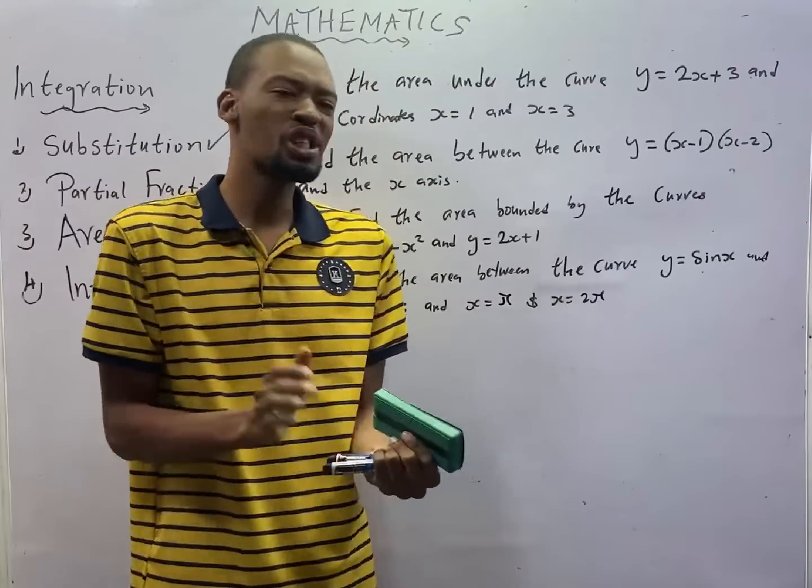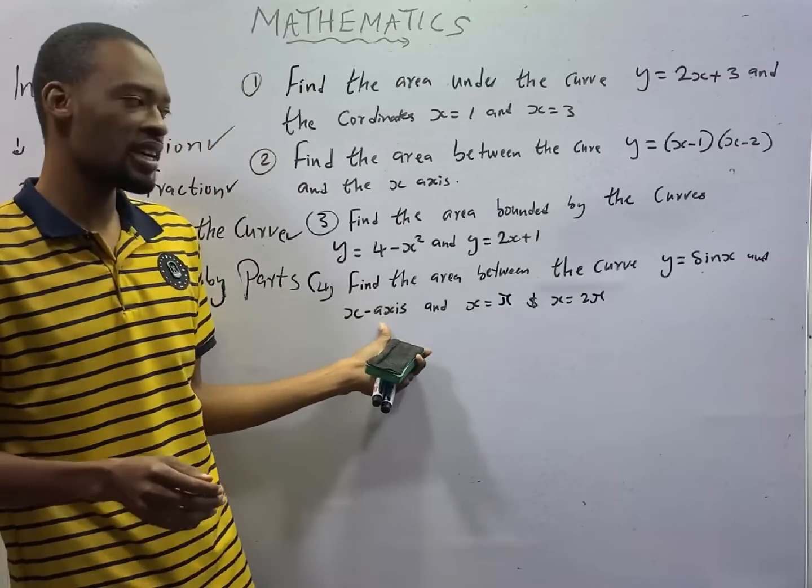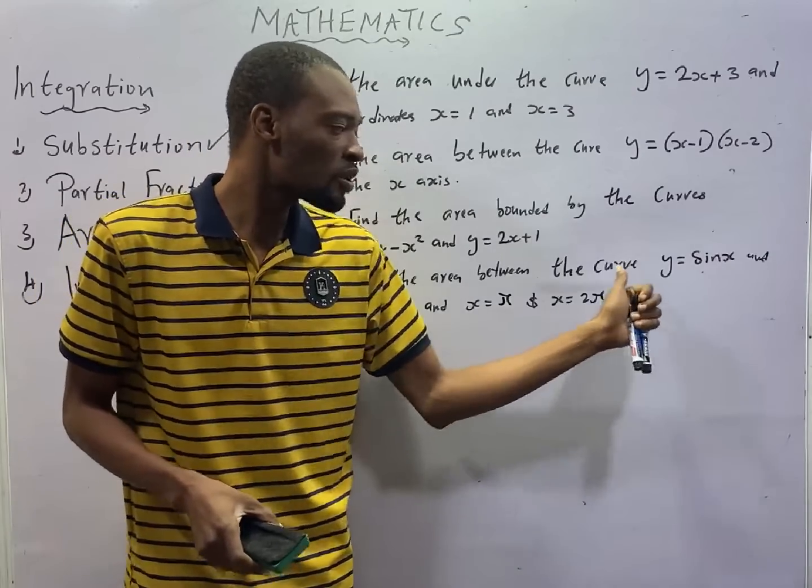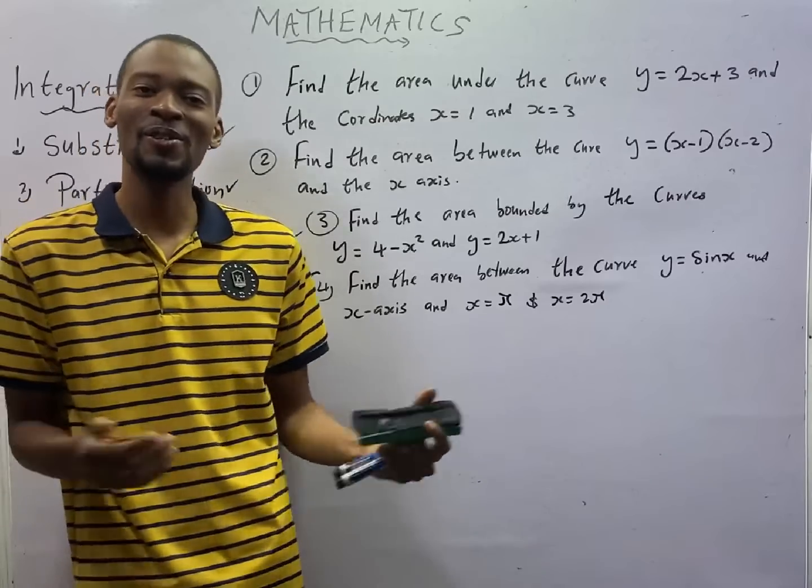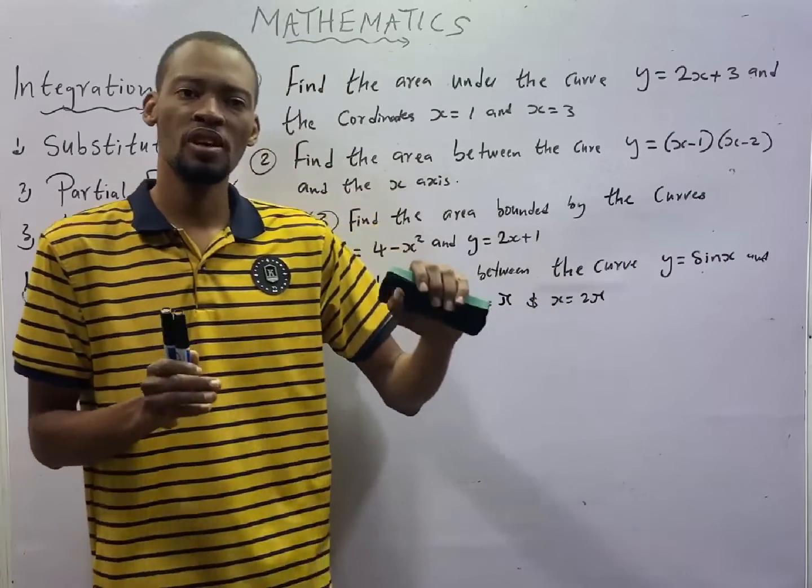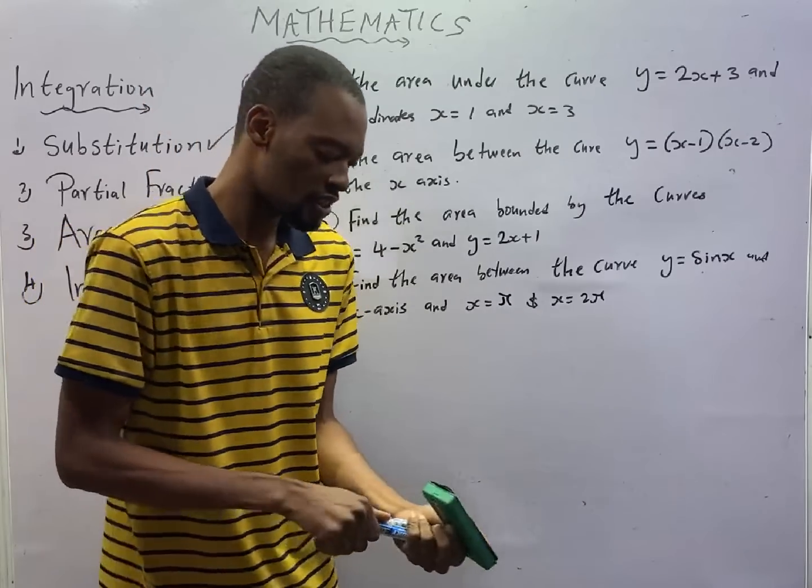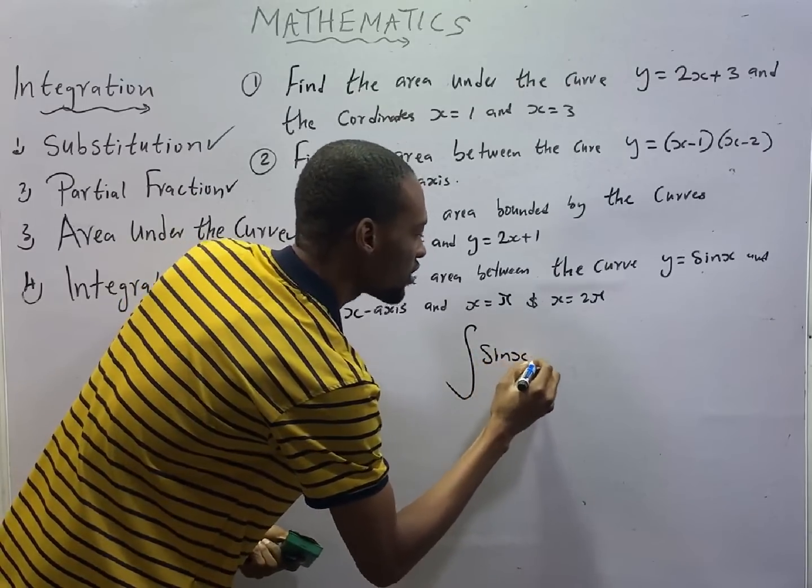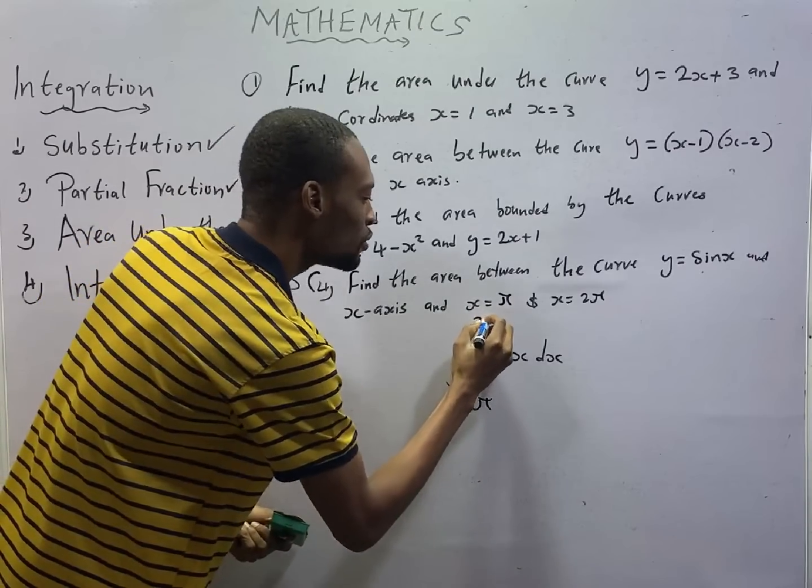Find the area between the curve Y equals sin x and the x-axis given that x is equal to π and x is equal to 2π. When you see questions like this, you do not need to panic. Simply integrate Y, then introduce the definite integrals from π to 2π.